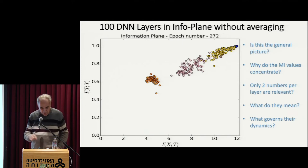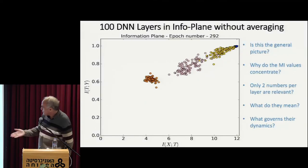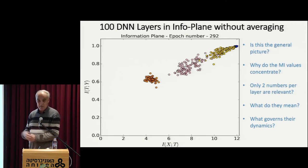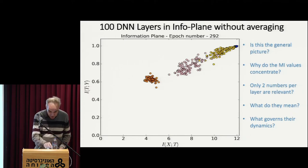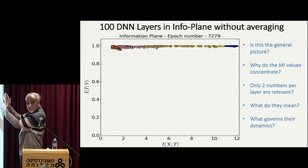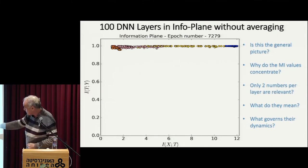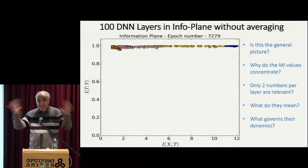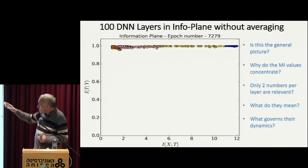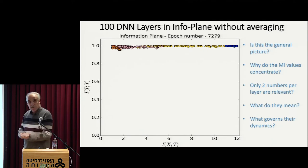Something quite strange happens here spontaneously. During the first phase of around 300 epochs of training, you increase the information about the label and move a little bit to the right — you also remember more the data in some sense. But from this point — 300 epochs more or less — all the way to the 10,000 epochs that we did here, you go up, which means improving generalization, and to the left. The last layer certainly goes to the left — eventually it remembers one bit about the input and one bit about the output, which is perfect. But why do all the other layers seem to be moving also to the left, and how do they do it?